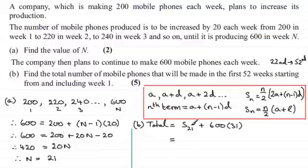So it's just a question now of just filling our values in. So for S21, using this version here, it's going to be 21 over 2 multiplied by a plus l, the first term, which was 200, plus the last term, which was 600. So I'll just write 200 plus 600 there.